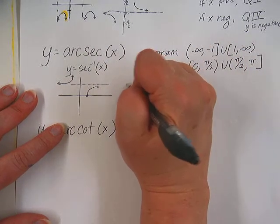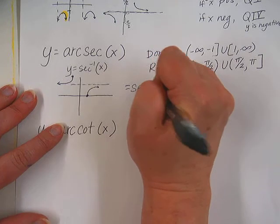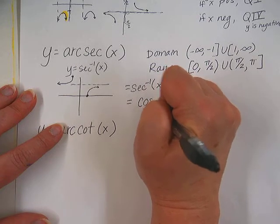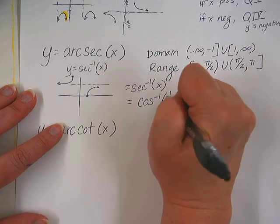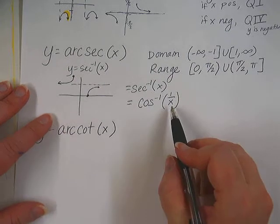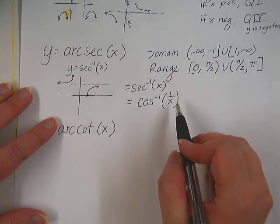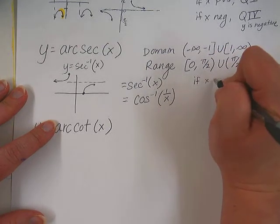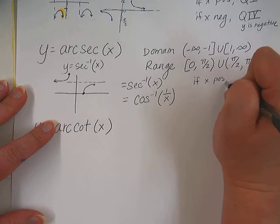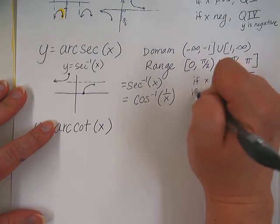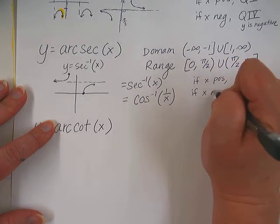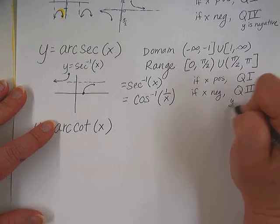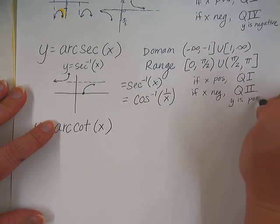Again, this can also be notated with the negative 1 notation. But to use your calculator, you're actually going to want to use cosine and do 1 over the x value that you're plugging in, or the reciprocal of the ratio for your calculator. So remember, if you plug in a positive x value, you're going to get an answer in quadrant 1, as always. But if you plug in a negative x value, then you're going to get a positive y value in quadrant 2, just like cosine.